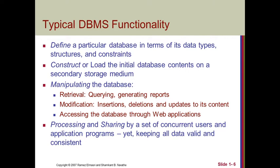The next main feature is processing and sharing by a set of concurrent users and application programs while keeping data valid and consistent. A database can be shared and processed concurrently by many users. A simple example is the railway reservation system, where all ticket bookers or passengers are viewing the railway reservation website to see which seats are empty. All are allowed to process, share, and view at once to book tickets. This is the best example of DBMS — it allows concurrent processing and sharing.